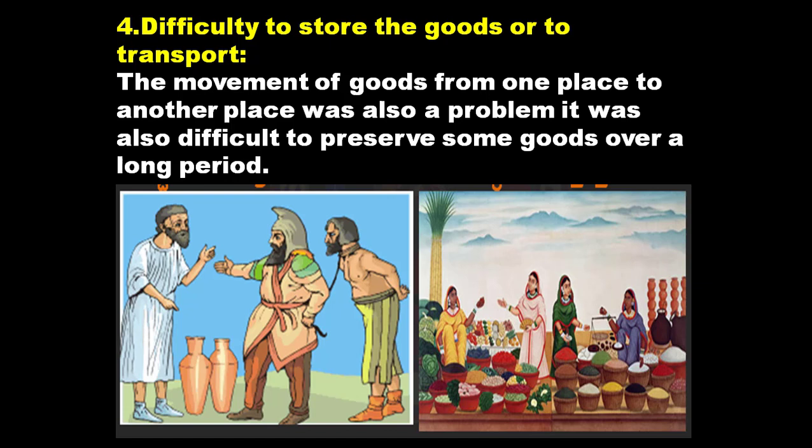The next difficulty was storing or transporting goods. The movement of goods from one place to another was also a problem. It was also difficult to preserve some goods over a long period — like perishable things such as vegetables or milk products, which cannot be preserved for many days. Some things were also very difficult to transport, creating storage and transportation problems under the barter system.